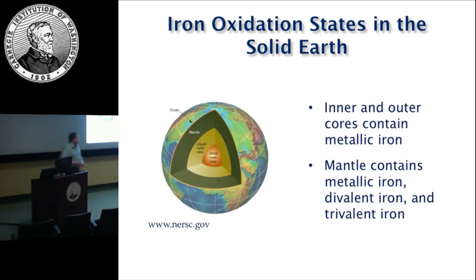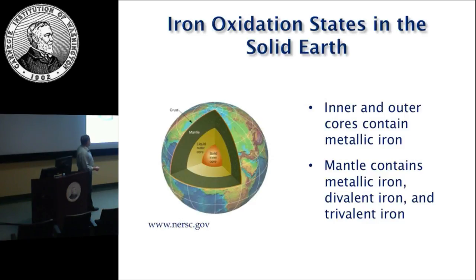It's the oxidation state of iron that is tying up this oxygen. If we look at the Earth as a whole, we see a big range of oxidation states. The inner and outer cores contain metallic iron. The upper mantle contains three different valence states: metallic iron, which is the reduced form; divalent iron or Fe2+; and trivalent iron or Fe3+, which is at modest concentrations relative to divalent iron. It's this ratio of divalent to trivalent that tells us something about oxygen fugacity.